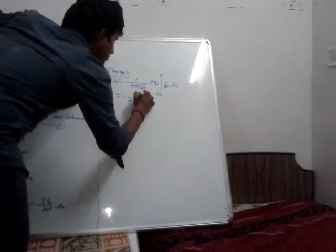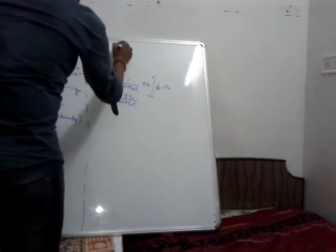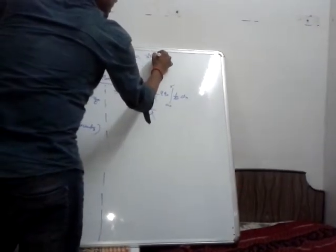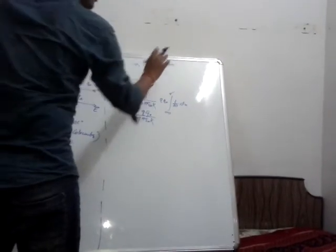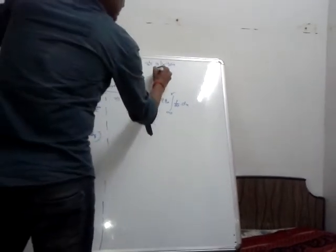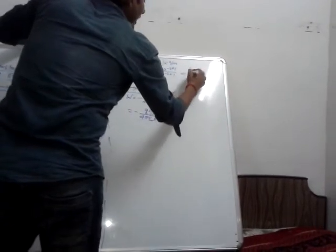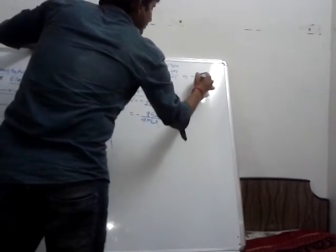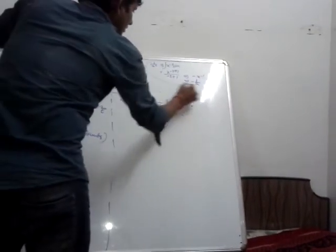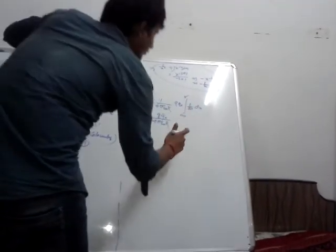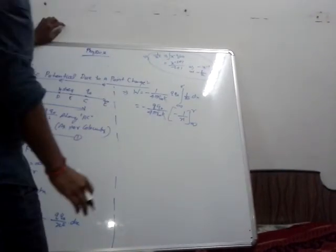So we will write QQ0, and the integration of 1 by X squared. Writing 1 by X squared as X to the power minus 2, if we do the integration of X to the minus 2 with respect to dx, the result is X to the power minus 2 plus 1 divided by minus 2 plus 1. Finally we get minus X inverse, so the value will be minus 1 by X. Therefore the integration of 1 by X squared is directly minus 1 by X, with the limit from infinity to R.